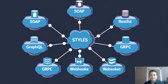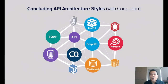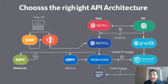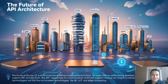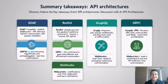And there you have it — the six different API styles, each with its own strengths and unique way of making things happen. Whether you need the formality of SOAP, the simplicity of RESTful, the precision of GraphQL, the speed of gRPC, the immediacy of Webhooks, or the real-time connection of WebSockets, there is a perfect fit for every situation. The key is to choose the right style for your needs. Thanks for joining me — don't forget to like, subscribe, and hit the bell icon for more tech stories. Keep coding and stay curious!